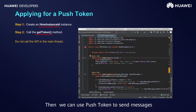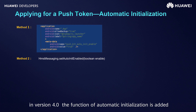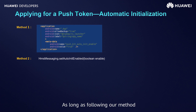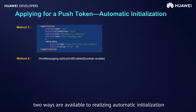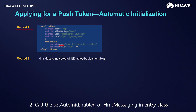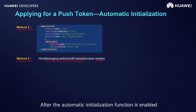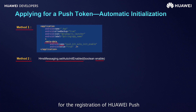In addition to obtaining a token using the getToken method, in version 4.0 the function of automatic initialization is added. As long as following one method, a token can be obtained without calling getToken. Two ways are available: One — add metadata configuration to the manifest file (the name here is unchangeable). Two — call the setAutoInitEnabled method of HMS Messaging in the Entry class with the parameter True. The new token will return in the onNewToken method. After automatic initialization is enabled, when the application is running, it will automatically apply for a token for Huawei Push registration.